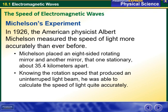The American physicist Albert Michelson measured the speed of light more accurately than ever before. Michelson placed an eight-sided rotating mirror and another mirror, that one stationary, about 35.4 kilometers apart. Knowing the rotation speed that produced an uninterrupted light beam...